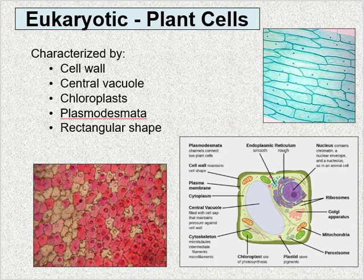Chloroplasts contain a pigment molecule called chlorophyll, which is green. The last and most simple characteristic of a plant cell is that they'll be rectangular in shape. The rectangular shape allows them to fit really closely to one another and provides a structurally sound organism. Plants have to deal with wind and storms, so they need to be a rigid structure — if they were made of round cells without a cell wall, they would just flop over.